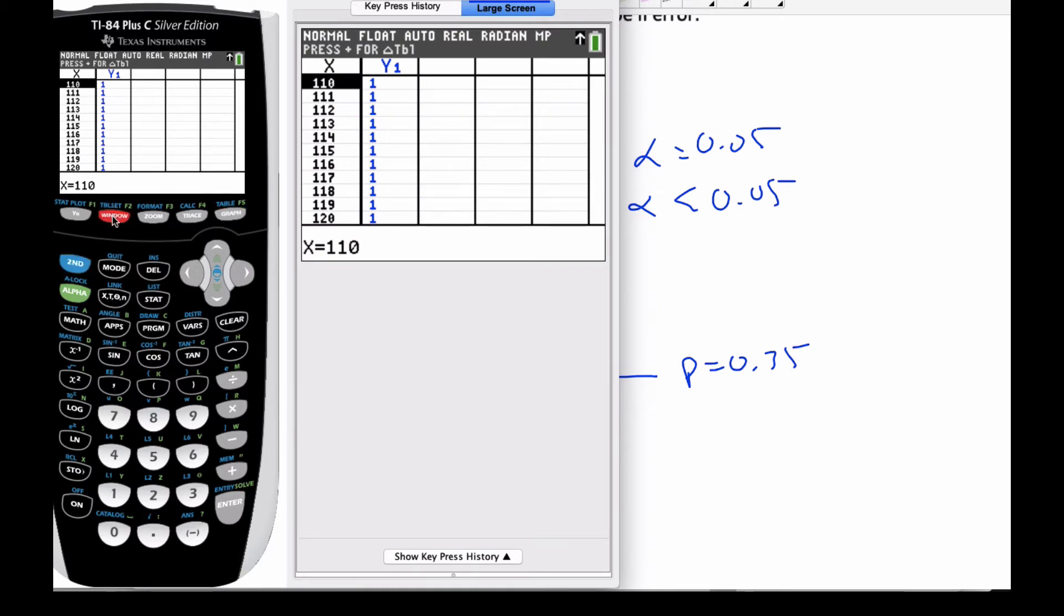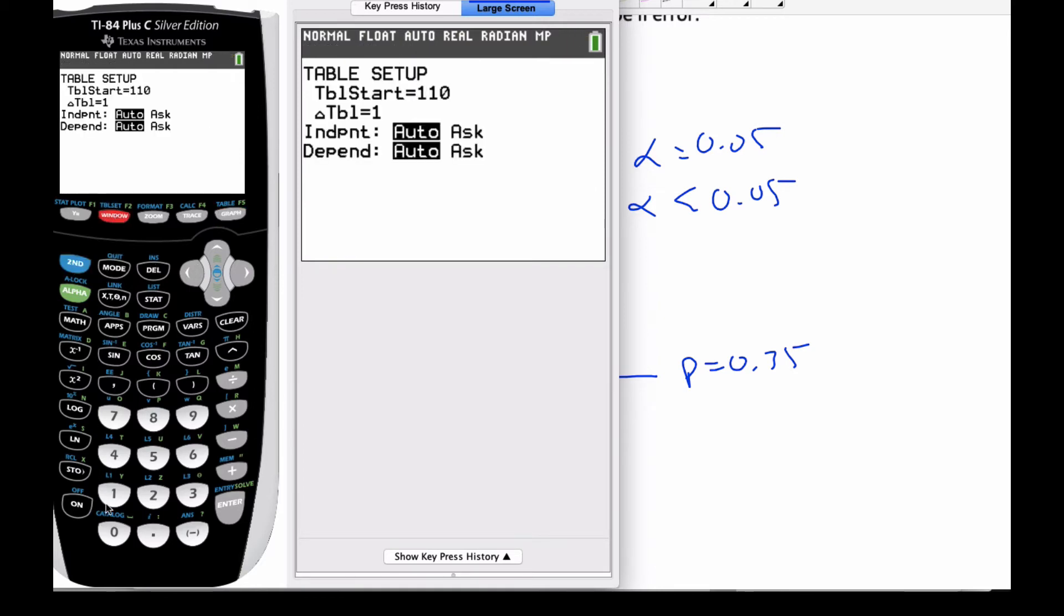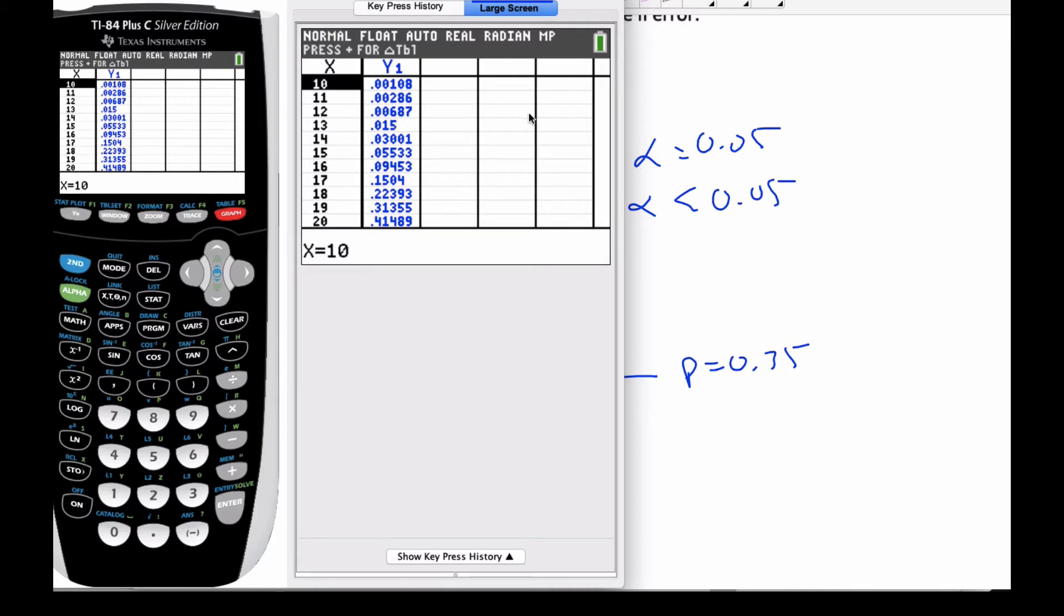I should start my table. Let me start my table at 10. And we're going by 1s. And if I look at my table now, looking at my table, I can see my cumulative probabilities.